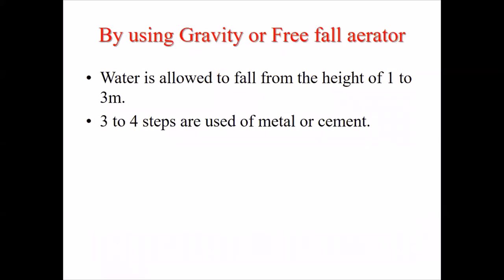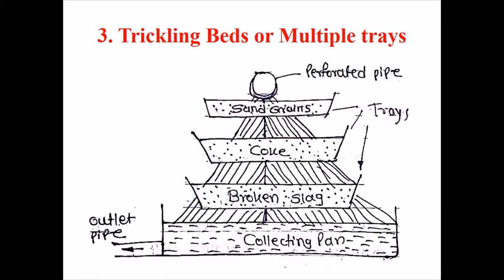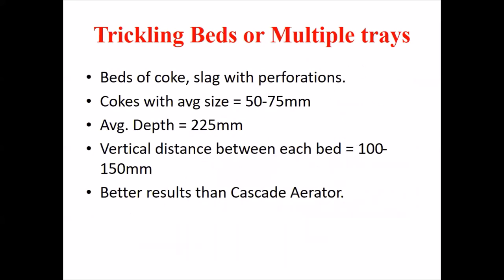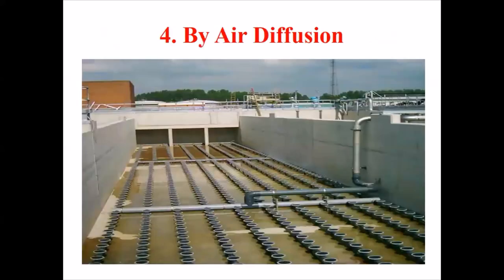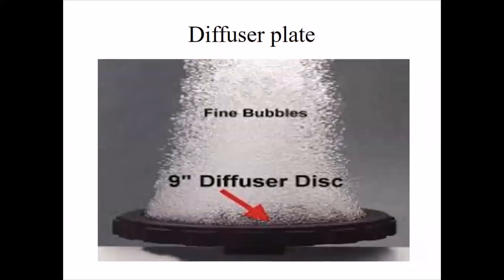By using the gravity or free-fall aerator, water is allowed to fall from a height of 1 to 3 meters with 3 to 4 steps using metal or cement trickling beds or multiple trays. Trickling bed or multiple tray beds use coke with an average size of 50 to 75 mm, average depth of 2 to 5 mm, and vertical distance between each bed of 100 to 150 mm, giving better results than a cascade aerator. By air diffusion, a centrifugal pump forces water through a diffuser plate into the atmosphere.